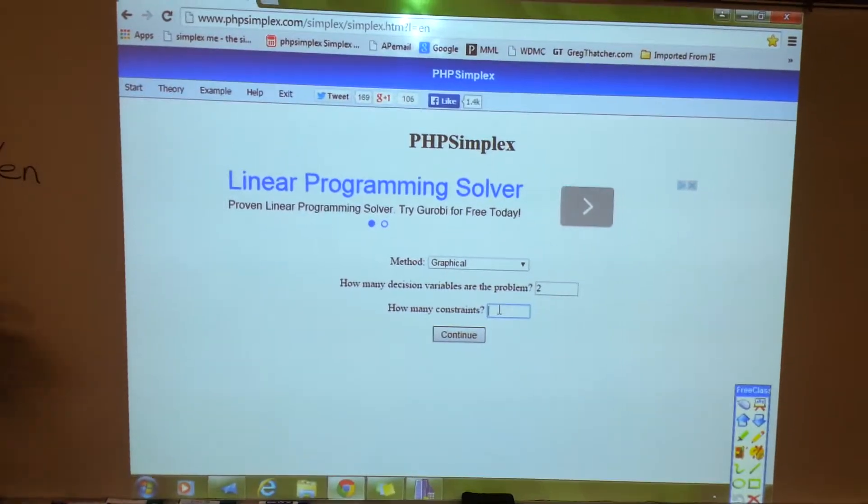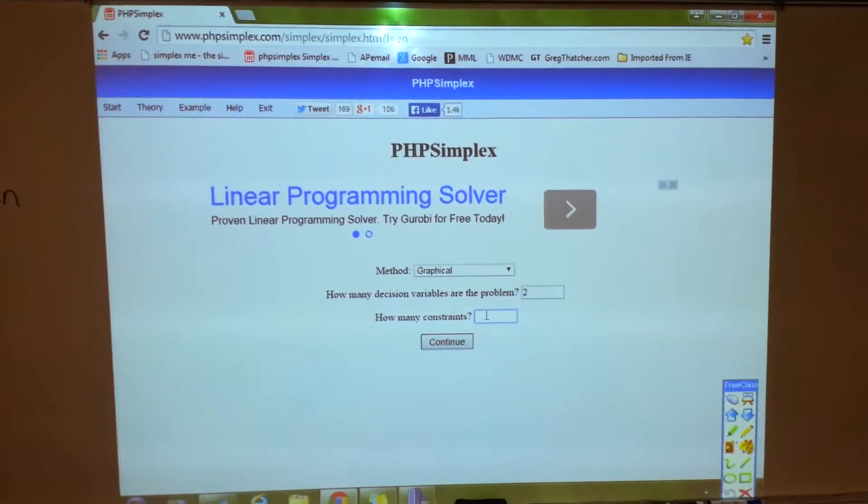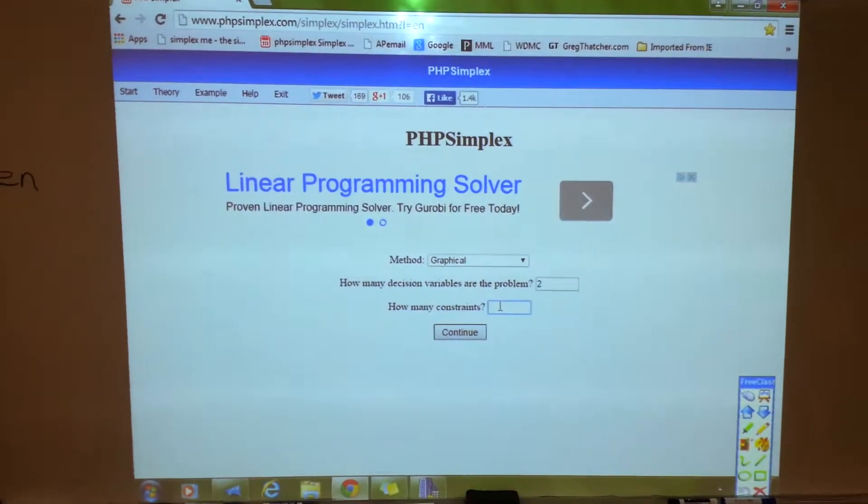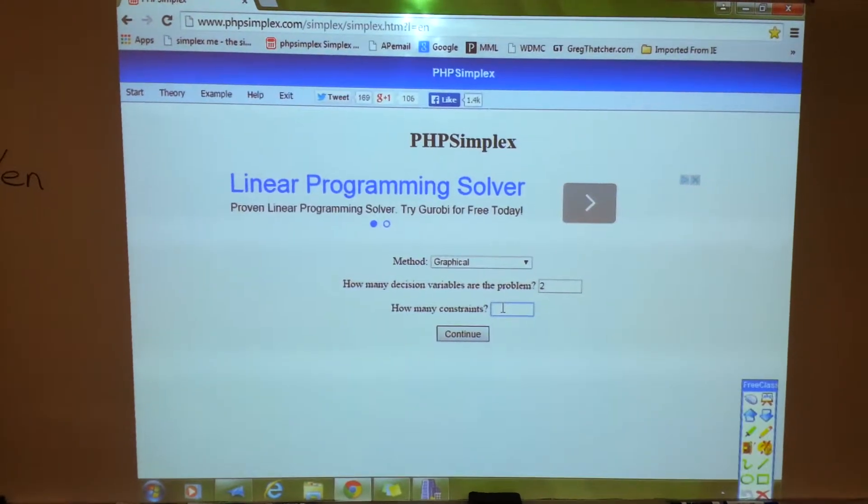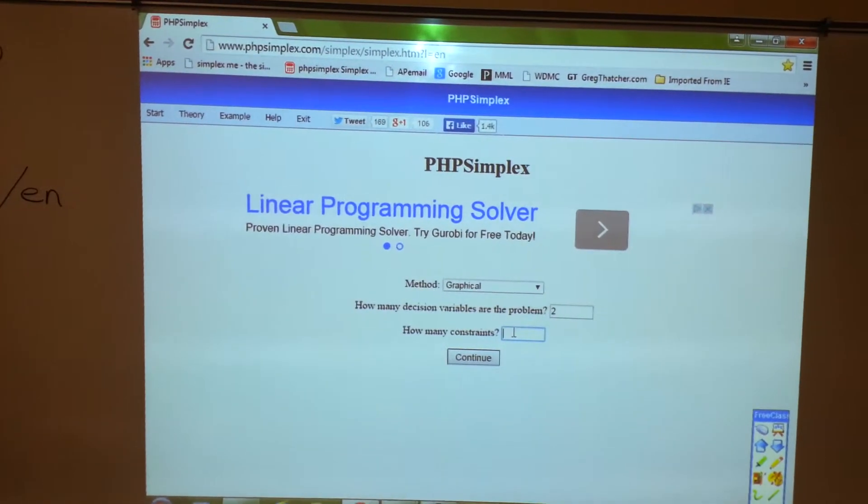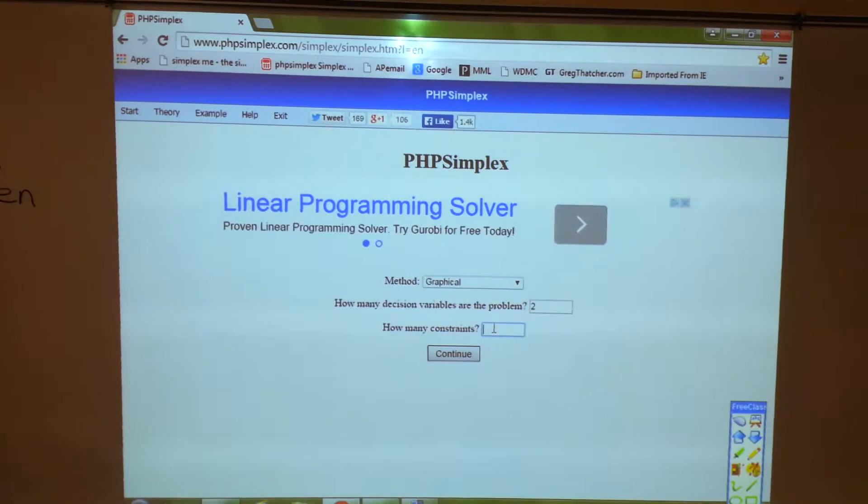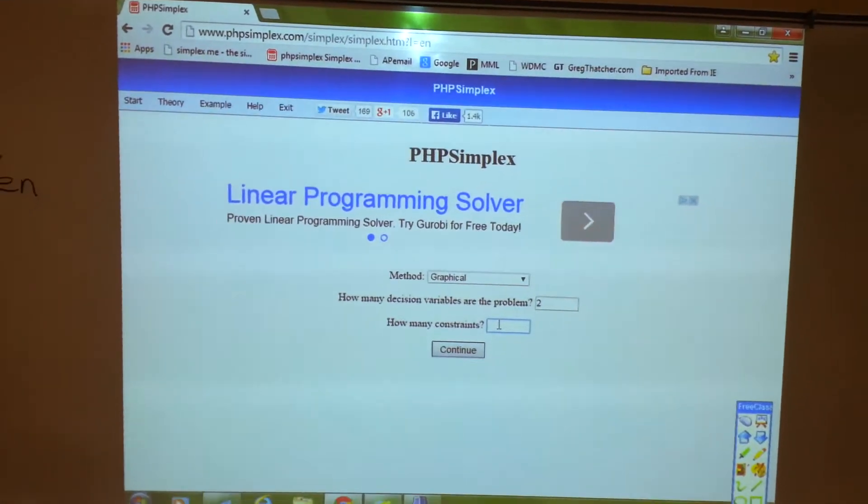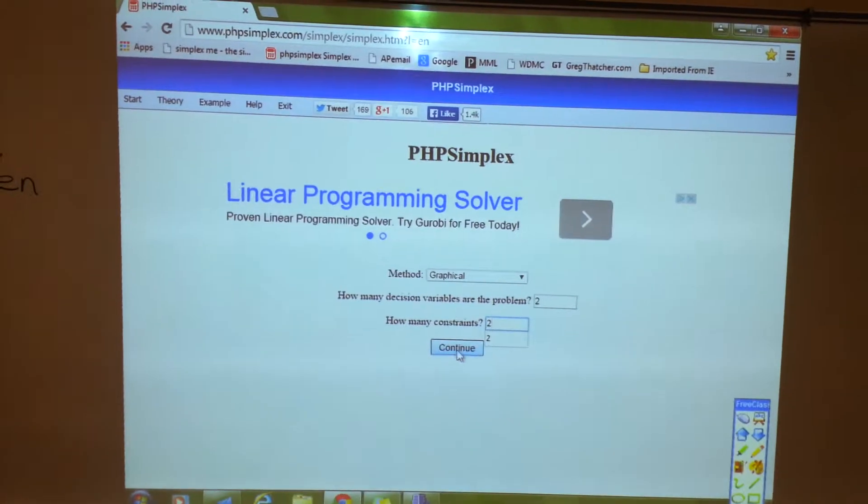Graphical method has two unknowns. When it says the constraints, that's how many statements with less than or greater than symbols, but not the non-negativity constraints. You don't include the x greater than or equal to zero and the y greater than or equal to zero. That's going to be assumed. So I'll put two, continue.